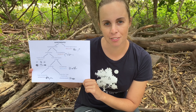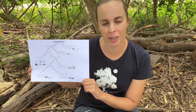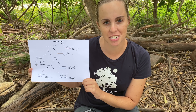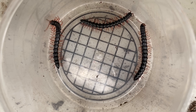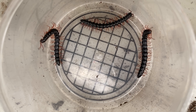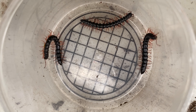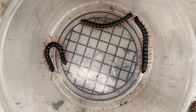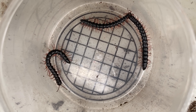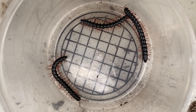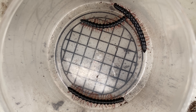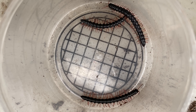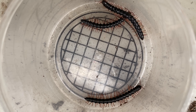To classify invertebrates we're going to use a branching key. We have found some millipedes and now want to find out what type of invertebrate they are. Let's take a closer look at the classification key.